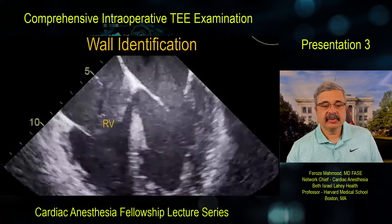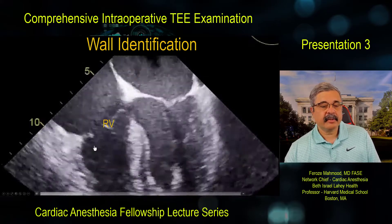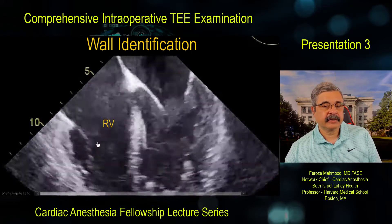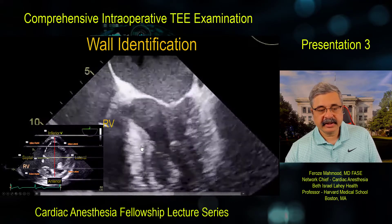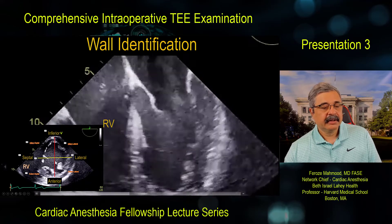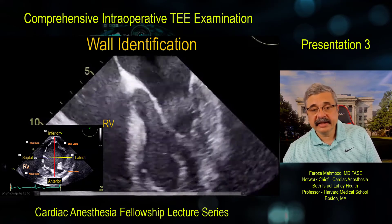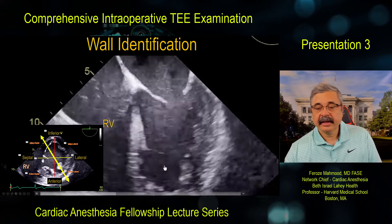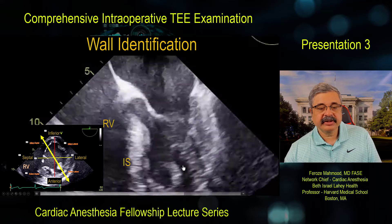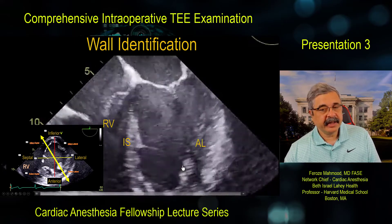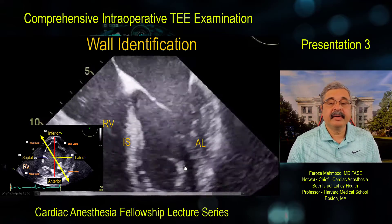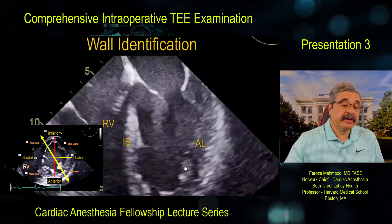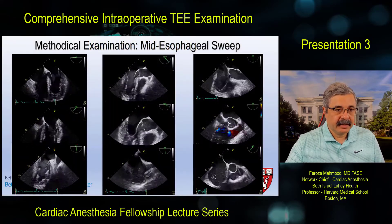In the mid-esophageal sweep, we look at initially a mid-esophageal four-chamber, then go to 45-degree transcommissural, then 90-degree two-chamber view, then mid-esophageal long axis. Then we focus more on the aortic and mitral valve — measuring LVOT diameter, aortic root dimensions, annulus transmitral E and A, and color flow Doppler. Then we rotate the probe to look at the bicaval window for the right upper pulmonary vein, interatrial septum, SVC, and IVC. At 90 degrees, we look at right ventricular inflow concentrating on the tricuspid valve, then further to the right ventricular outflow tract and short axis of the aortic valve.